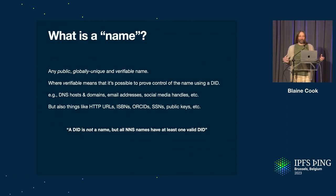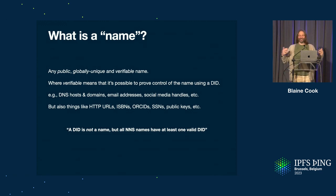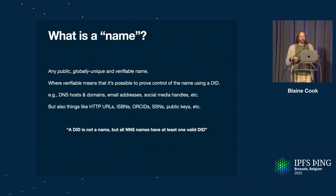A DID is not a name, and I think this is an important but subtle point. No one's ever going to say their name is "DID key ZBE0538247" out loud. It's not a name — it's not something that people use as names. But I think DIDs are really important because they give us a way to prove that we can control a name. So, all NNS names would have at least one valid DID.